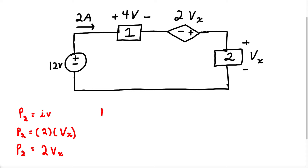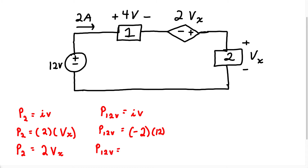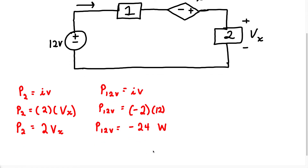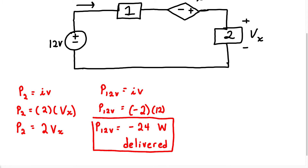Now let's calculate the power in the 12-volt source. The power equals current times voltage. The current is 2 amps, but as the 2 amps flows around this circuit, when it reaches this particular element, it's going to go from the negative terminal to the positive terminal. Because it's going into the negative terminal, we say this is going to be negative current — negative 2 amps. The voltage is 12 volts. So negative 2 times 12 gives us negative 24 watts. Because we have a negative power, this particular element is delivering power.